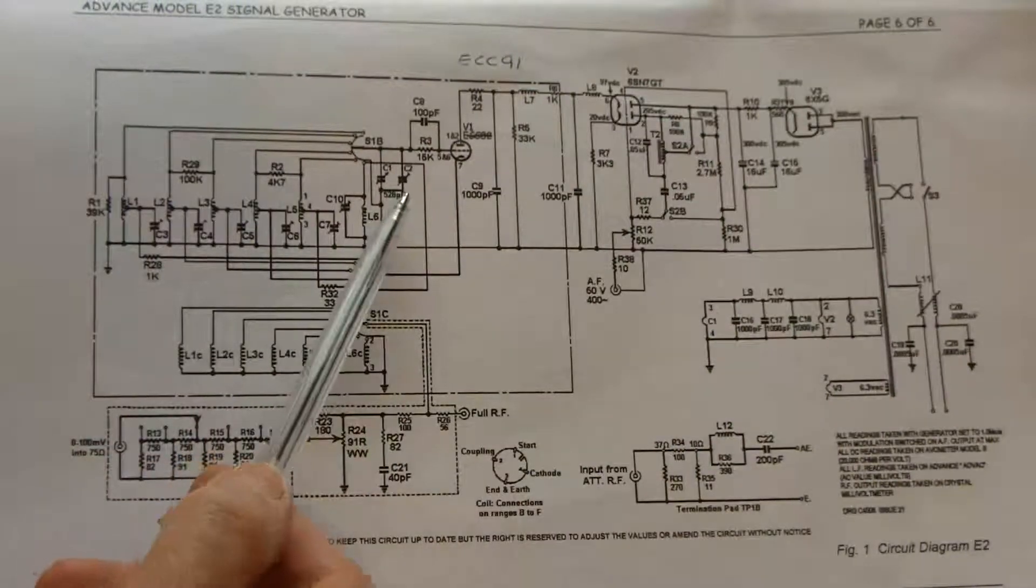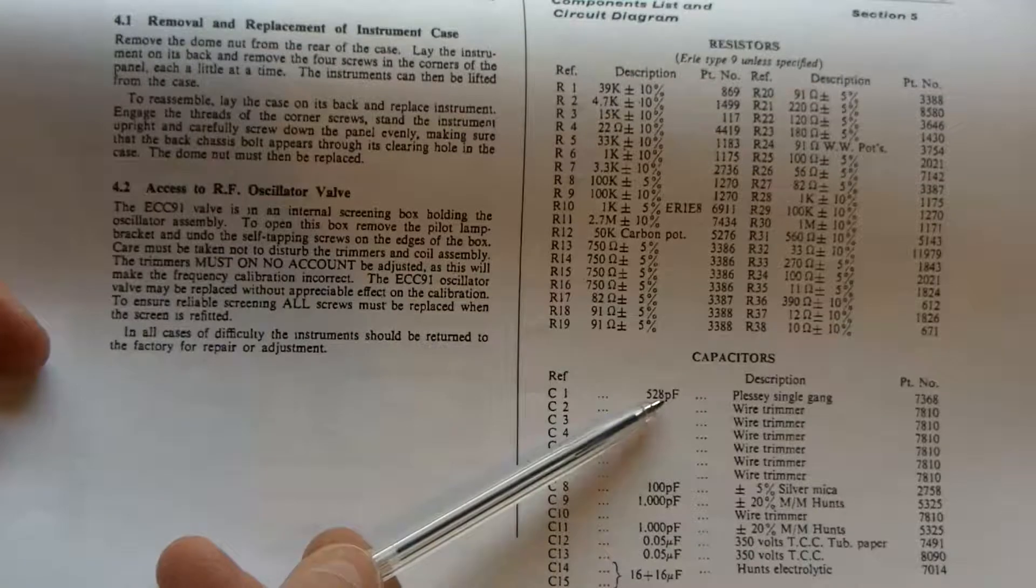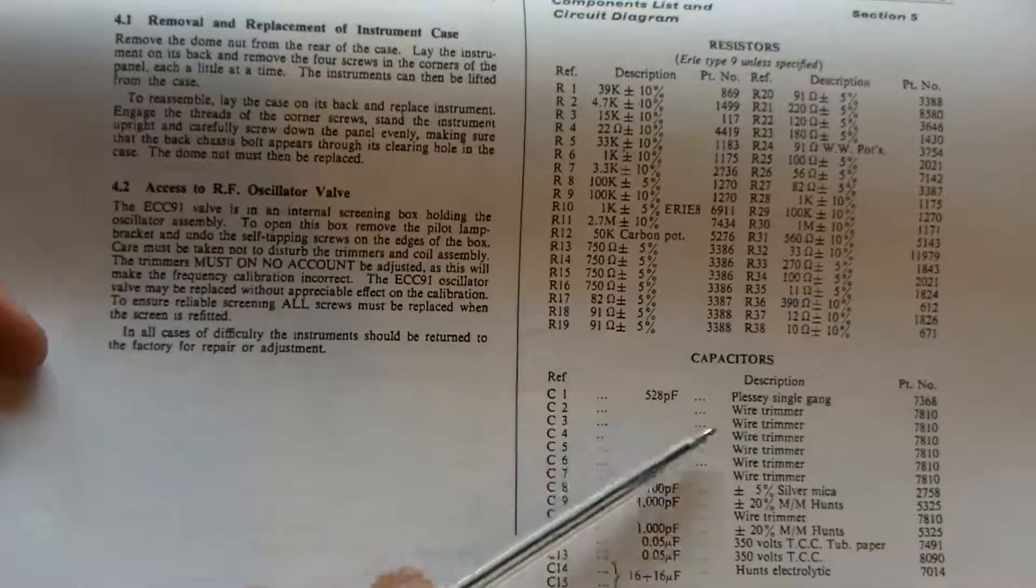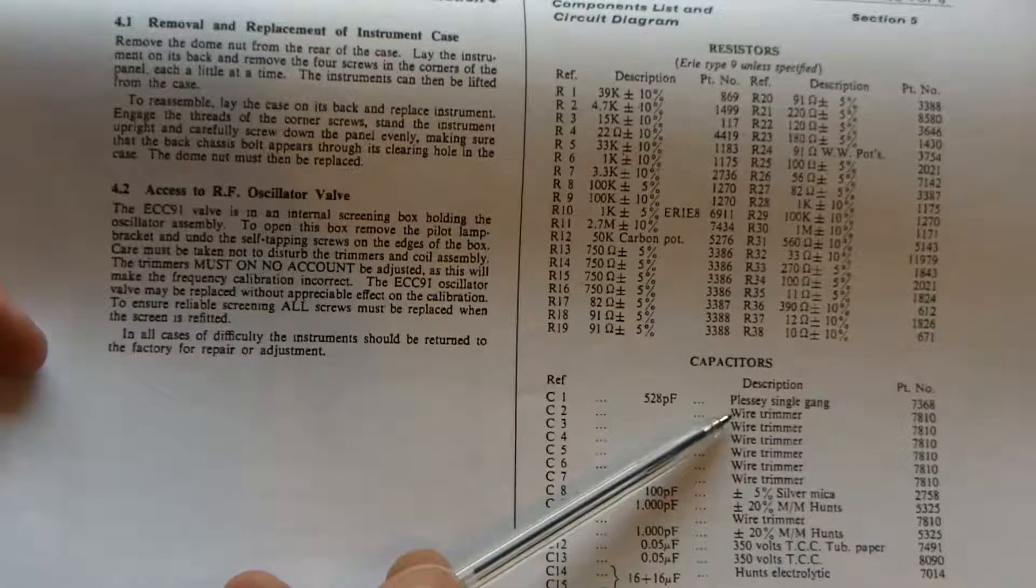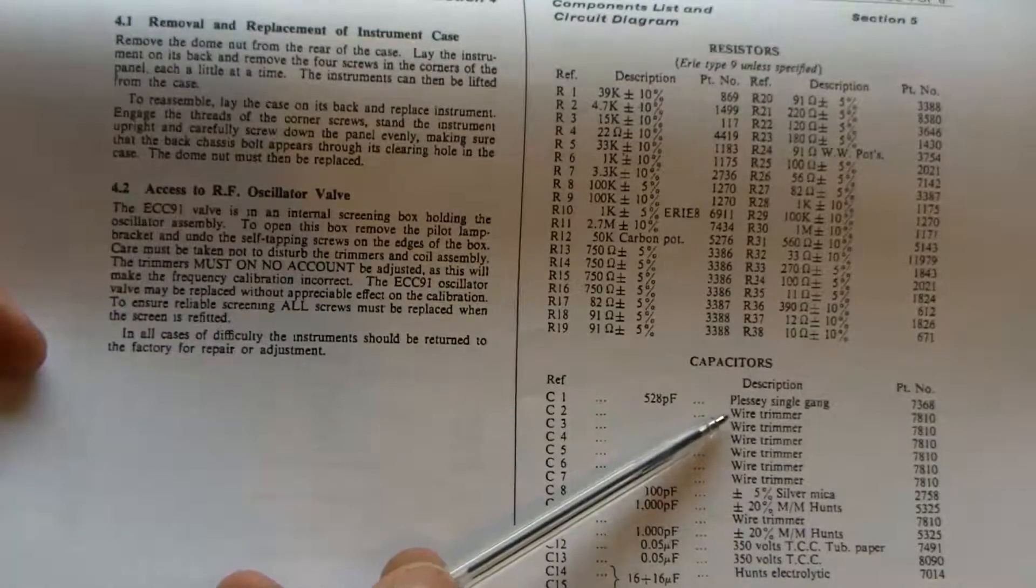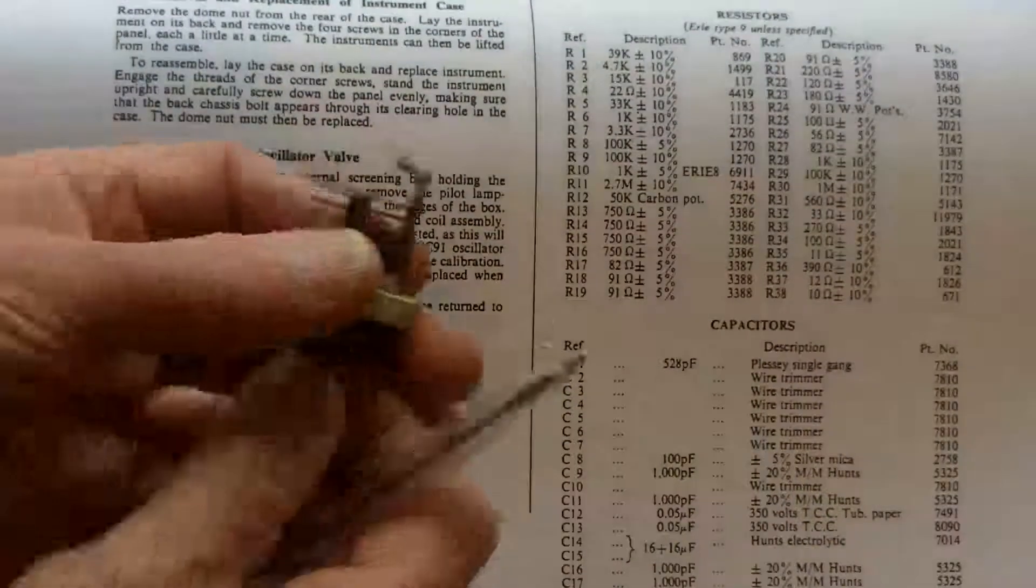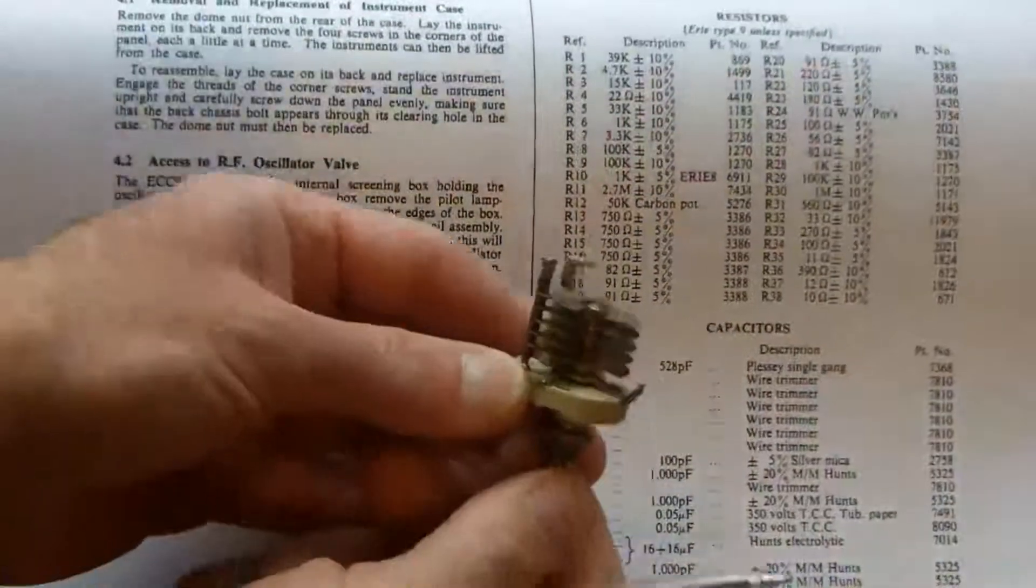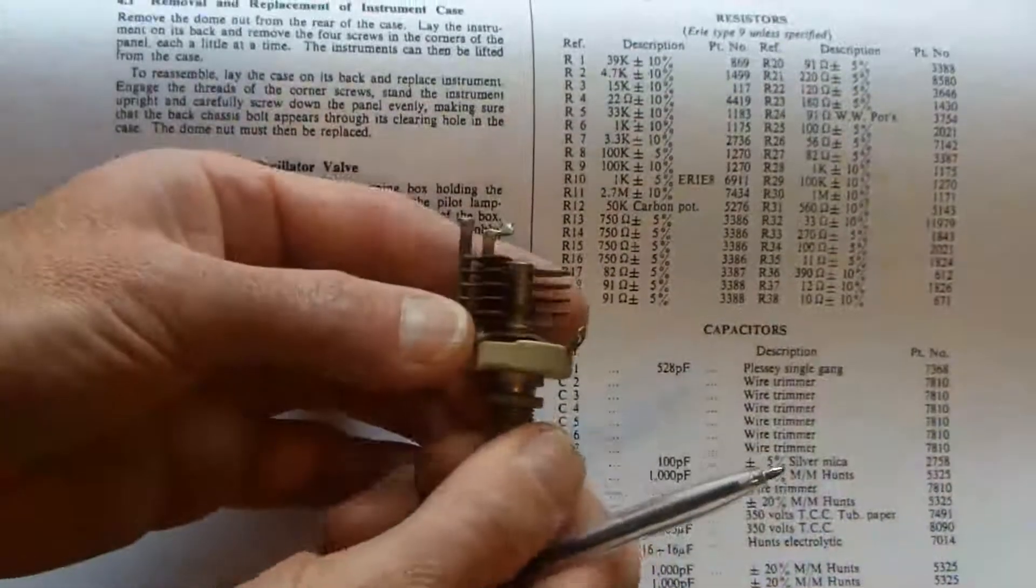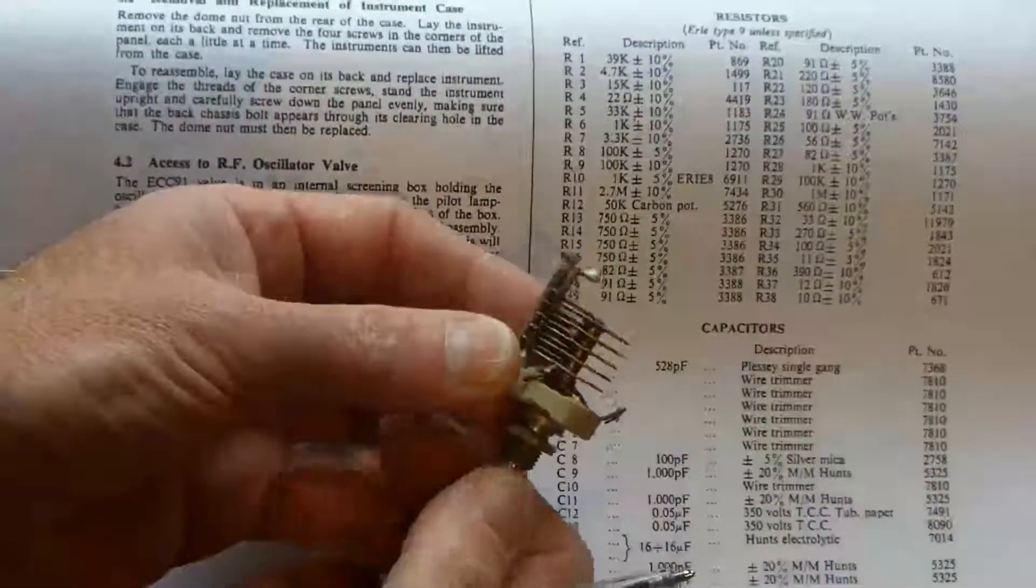If we look at C1 on the parts list, it's a 528 picofarad single gang capacitor. But C2 they've got listed as a wire trimmer, which would be a gimmick. I've talked about gimmicks in an earlier video about capacitors. This is the only variable capacitor I've got that's suitable, so I'll fit that in and pull off plates if needed if it's too oversized.